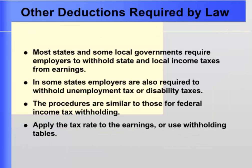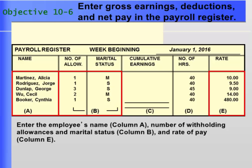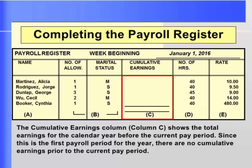Most states and some local governments require employers to withhold state and local income taxes as well. Objective 6 is to enter gross earnings, deductions, and net pay in the payroll register, which is a record of payroll information for each employee for the pay period. Alicia Martinez has one withholding allowance and is married. She worked 40 hours this week and is paid $10 per hour. Since this is the first payroll period for the year, there are no cumulative earnings prior to the current period. This figure is needed to determine whether the employee has exceeded the earnings limit for FICA Social Security, FUTA, and SUTA taxes.